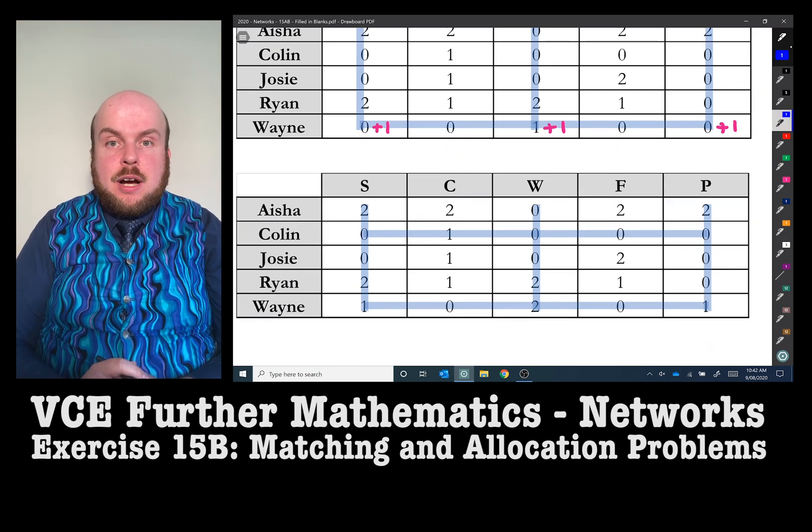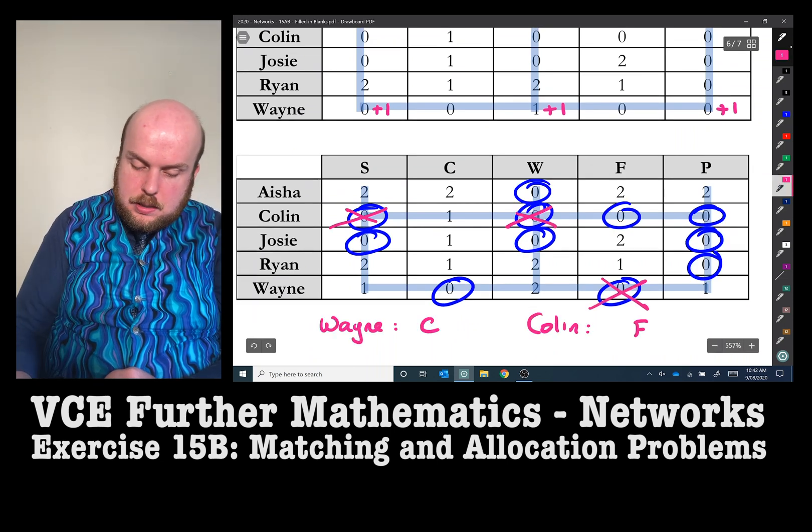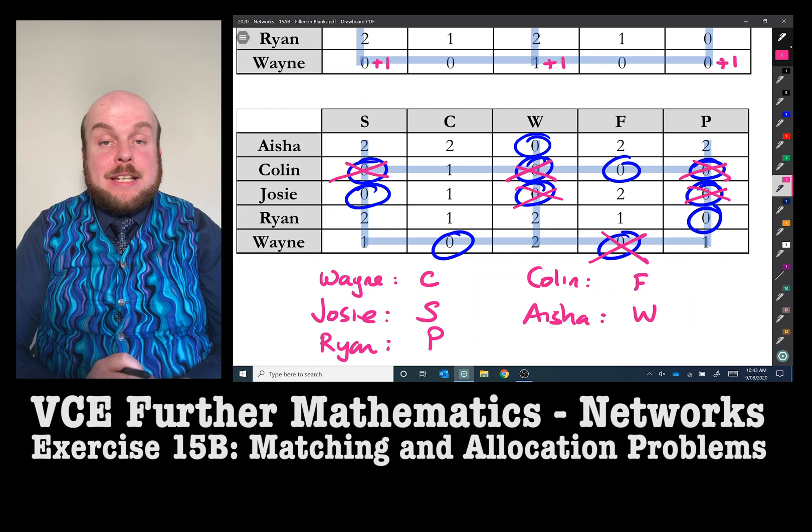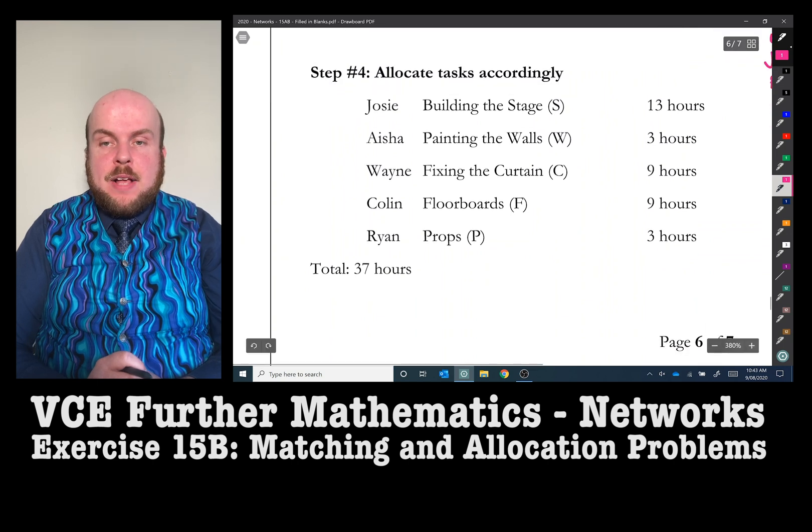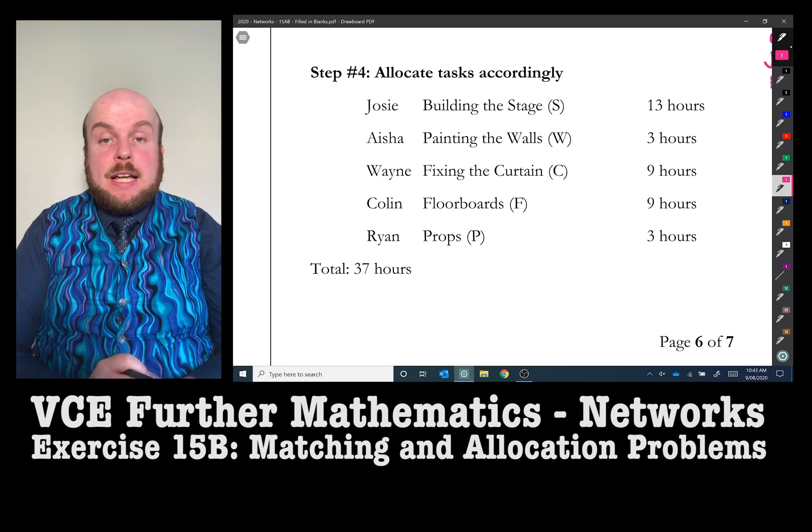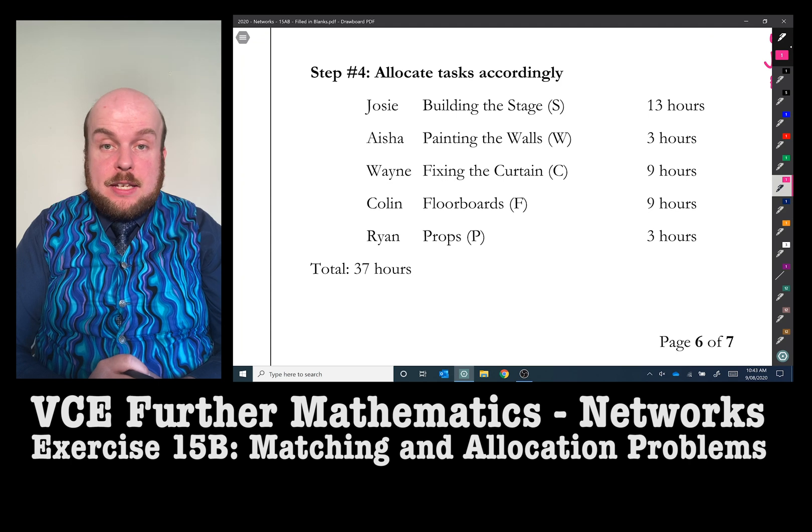Now all we need to do is to identify who should be doing which job. Once we have identified who should now do each job, we just need to go back to the original table and add all of their hours together. And thus we have done our correct allocation. In this case, it would be 37 hours. So doing the Hungarian algorithm is something that you are required to be able to do, especially if you need to draw a bipartite graph to indicate the maximum optimal allocations for each person. However, don't forget to use your logic as well as some basic numeracy to be able to check your answers by looking through the original table.